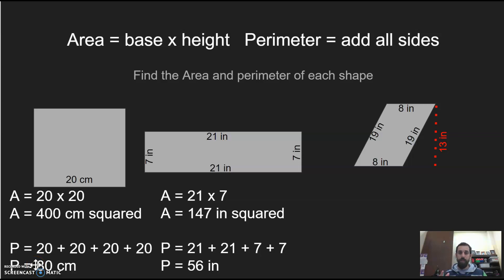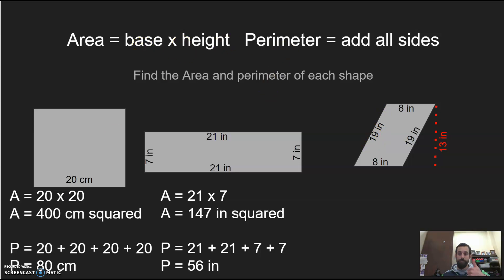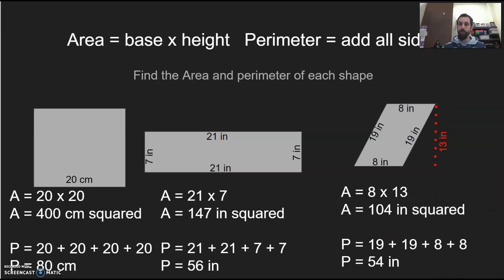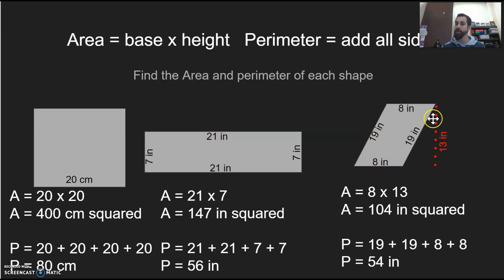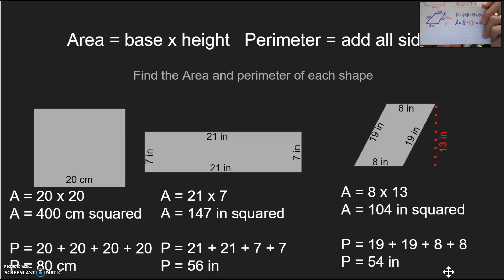The last shape is the parallelogram. I believe in you — you can do it. Remember, don't let the 13 height confuse you when finding perimeter, and don't let the diagonal 19 confuse you when finding area. For area we multiplied 8 × 13 = 104 inches squared — 8 is the base and 13 is the height. For perimeter: 19 + 19 + 8 + 8, using only the actual sides. We did not include the 13 because that is a height, not a side.